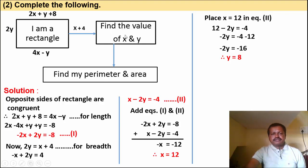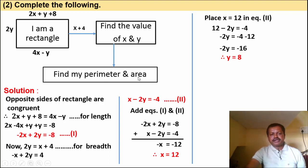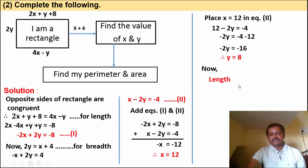This answers the first part — find x and y. Now find the perimeter and area. First find the sides of the rectangle. Length is equal to 4x minus y.